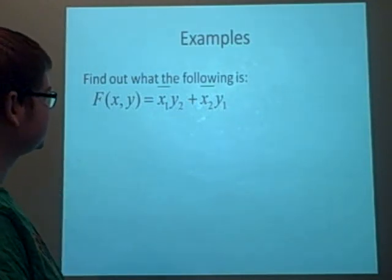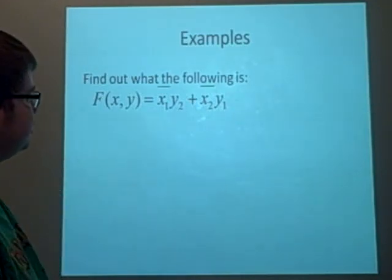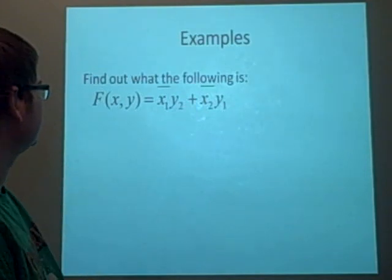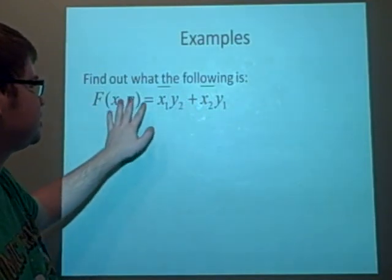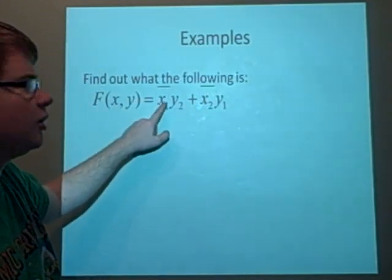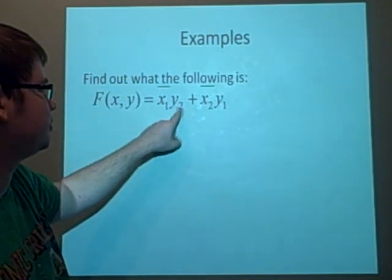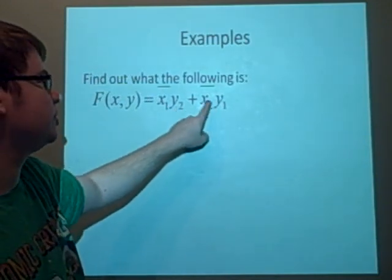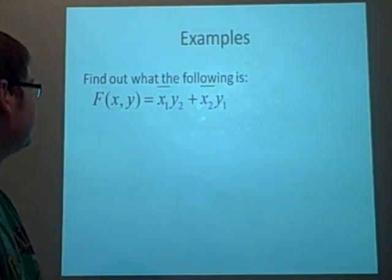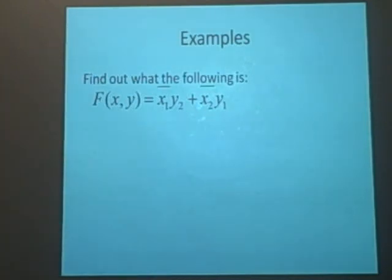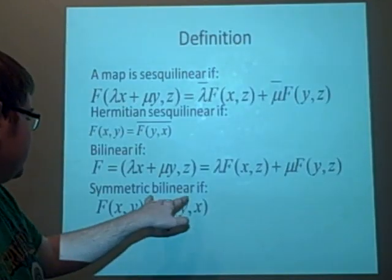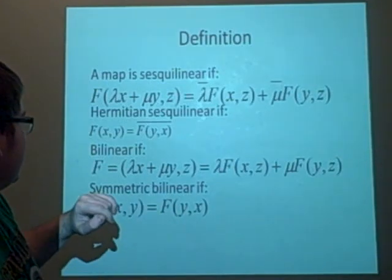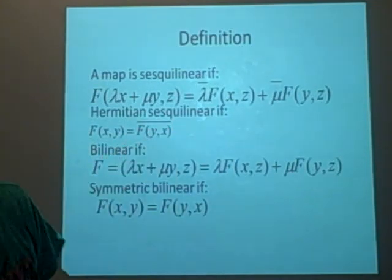So we've got two examples. We want to find out what this is. So, sorry, the lines are a bit high, aren't they? F of xy, this is our map, where it takes the complex conjugate of x1 times y2 plus complex conjugate of x2 times y1. Now, first thing we'll try, we'll try to see if it is either symmetric bilinear or a Hermitian sesquilinear.